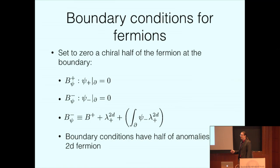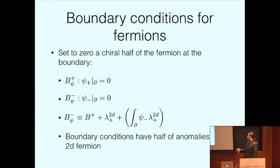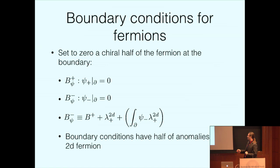B+ and B− are not completely unrelated. If you start from one and add a two-dimensional chiral fermion, you can convert it to the other via a mass deformation—think of it as a Lagrange multiplier. Starting with B+ (ψ+ = 0, ψ− free), you can add λ to kill ψ− and let ψ+ couple to λ to become dynamical at the boundary. This allows you to get the anomaly properties of these boundary conditions cheaply: they have half the anomalies that a fermion with the same quantum numbers would have.